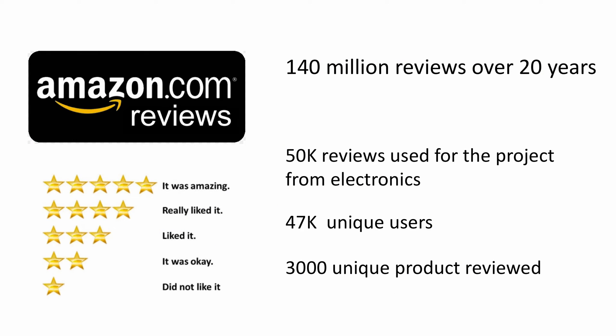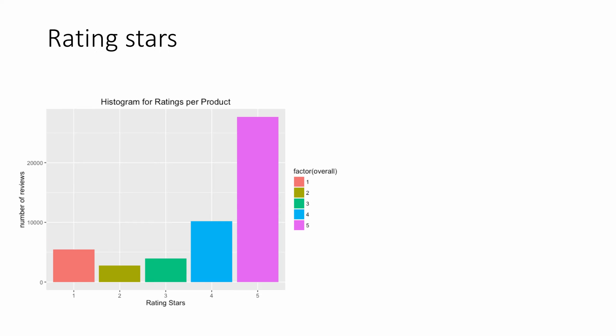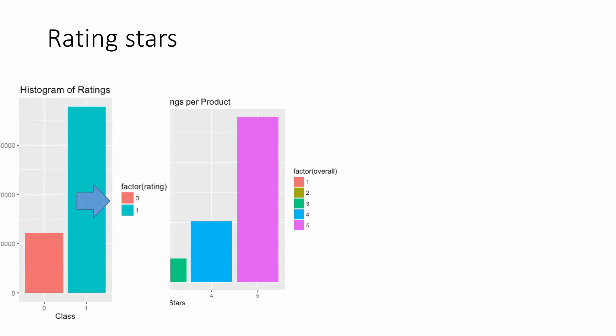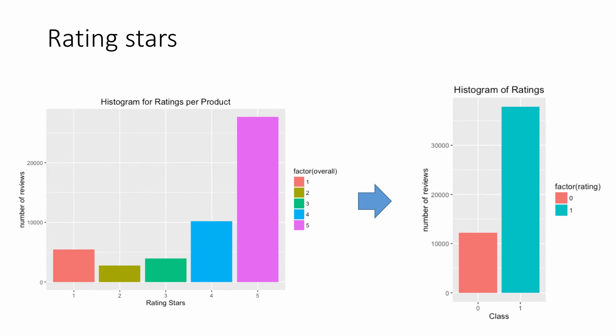In this project, we looked at Amazon's product reviews from the electronics department. The original data contains millions of rows, but because of hardware limitations, we decided to limit the study to 50,000 samples only. Then we analyzed the star rating system and decided to make our binary cutoff at two stars. Then we balanced the likelihood.